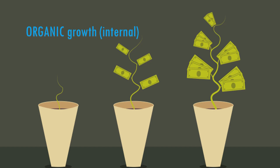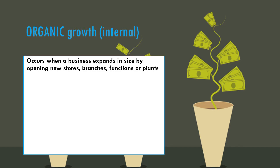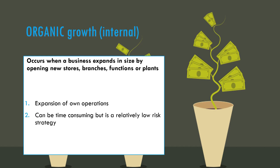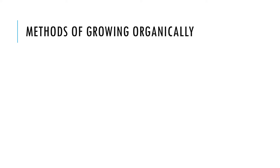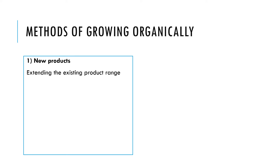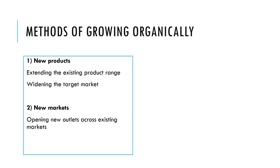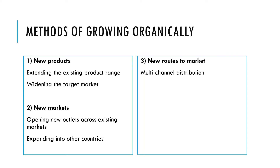Organic growth, sometimes known as internal growth, occurs when a business expands in size by opening new stores, branches, functions, or plants — effectively going alone and expanding its own operations. This can be time-consuming but it's a relatively low-risk strategy because control is easier to maintain. A business could grow organically by releasing new products, extending the product range, widening the target market, opening new outlets, expanding into other countries, or developing new routes to market such as e-commerce.